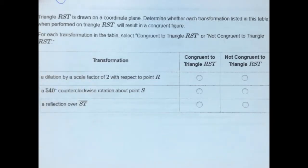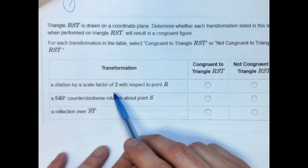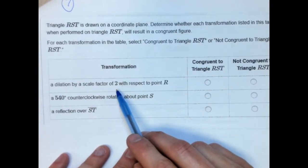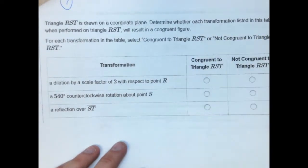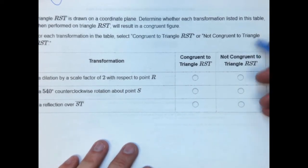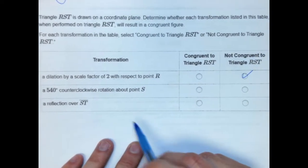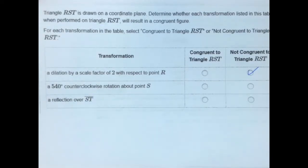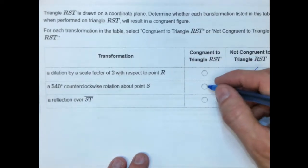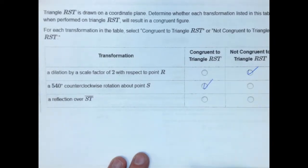We have a dilation by a scale factor of 2 with respect to point R, a 540 degrees counterclockwise rotation about point S, and a reflection over ST. So you need to understand the difference between rigid and non-rigid transformations in order to get this problem correct. Basically, when you multiply something by 2, it's going to create an enlargement. So the resulting triangle will be larger than the previous one, so it's obviously not going to be congruent.